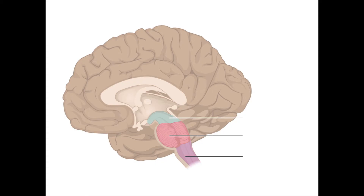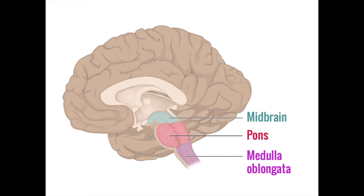The brainstem isn't a single homogenous structure, but instead is split into three parts: the midbrain, the pons, and the medulla oblongata, sometimes just called the medulla. The midbrain is the uppermost part and receives nerve impulses traveling to and from many structures. These nerves continue down the midbrain into the pons and then into the medulla at the bottom before finally exiting the skull as the spinal cord.